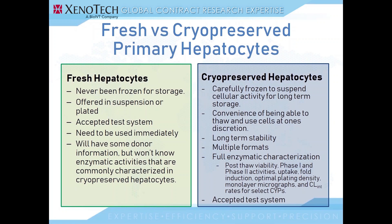Another major differentiation between test systems is freshly isolated, never-frozen hepatocytes and cryopreserved hepatocytes. Fresh hepatocytes have to be used shortly after isolation from the tissue. They can be used in suspension or plated formats and are an accepted test system by regulatory agencies, but they need to be used relatively quickly as they become available. And if ordering them, you may not have access to all the donor's medical history during the ordering time window.